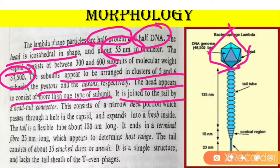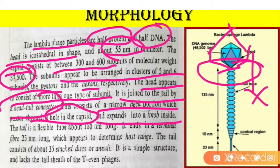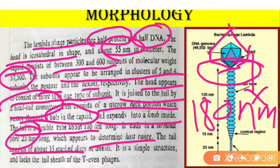The head is joined to the tail by the head-tail connector, which consists of a narrow neck portion that passes through the hole in the capsid and expands into the knob side. The tail is very flexible in nature and is about 180 nanometers long. It ends in a terminal fiber which is about 25 nanometers long, which appears to determine the host range. The tail consists of 35 staggered discs or annuli, and is a very simple structure that lacks the tail sheath and even base plates.